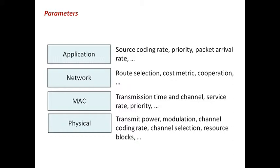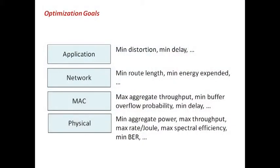So the parameters that you're trying to consider and allocate may be at various layers in the protocol stack. At the application layer, you may be looking at the source coding rate for video streaming, or the priority of a certain application over another. At the network layer, you may have some route preference or cost metric. At the MAC layer, you may have the time that you can hold the channel for, or some idea of priority in accessing the medium. At the physical layer, we may have all the typical physical parameters: the channel coding rate, the transmit power, the type of modulation that you select, what frequency to operate at, and so on.